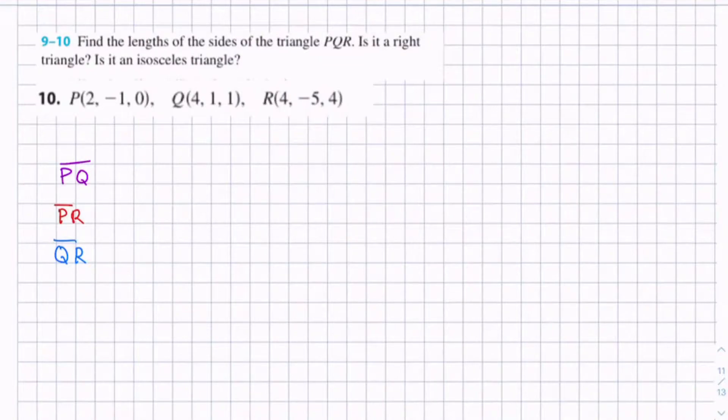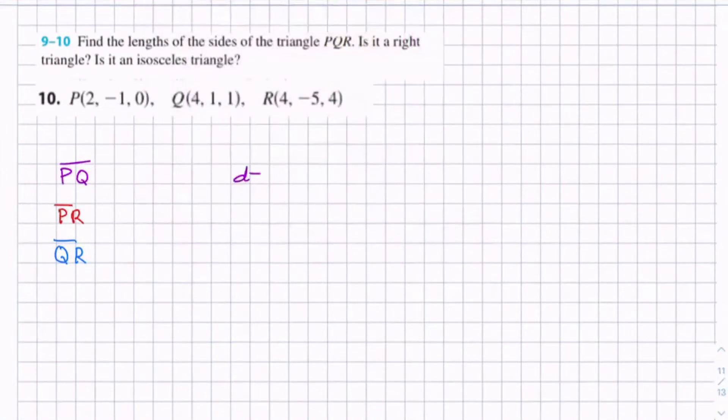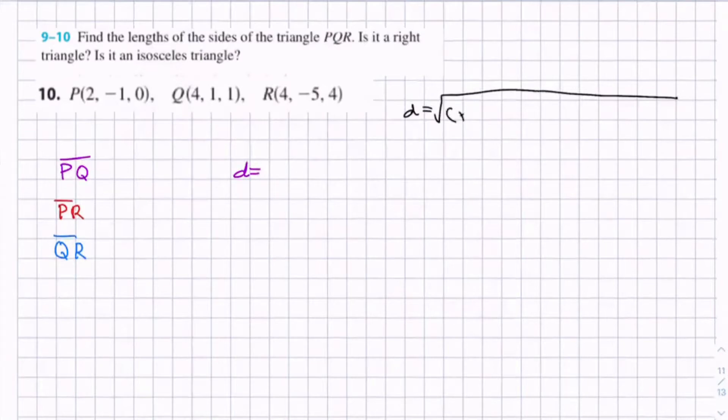So now to find the distance between the points, we can apply the distance formula for points, which is d equals the square root of (x - x₁)² plus (y - y₁)² plus (z - z₁)².